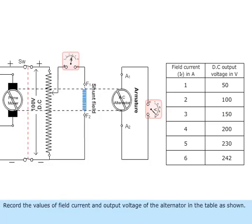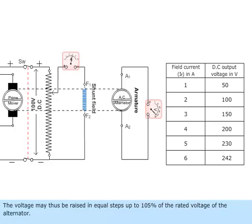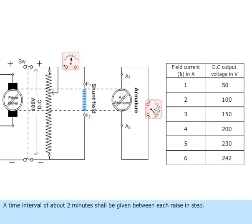Record the values of field current and output voltage of the alternator in the table as shown. The voltage may thus be raised in equal steps up to 105% of the rated voltage of the alternator. A time interval of about two minutes shall be given between each raised step.